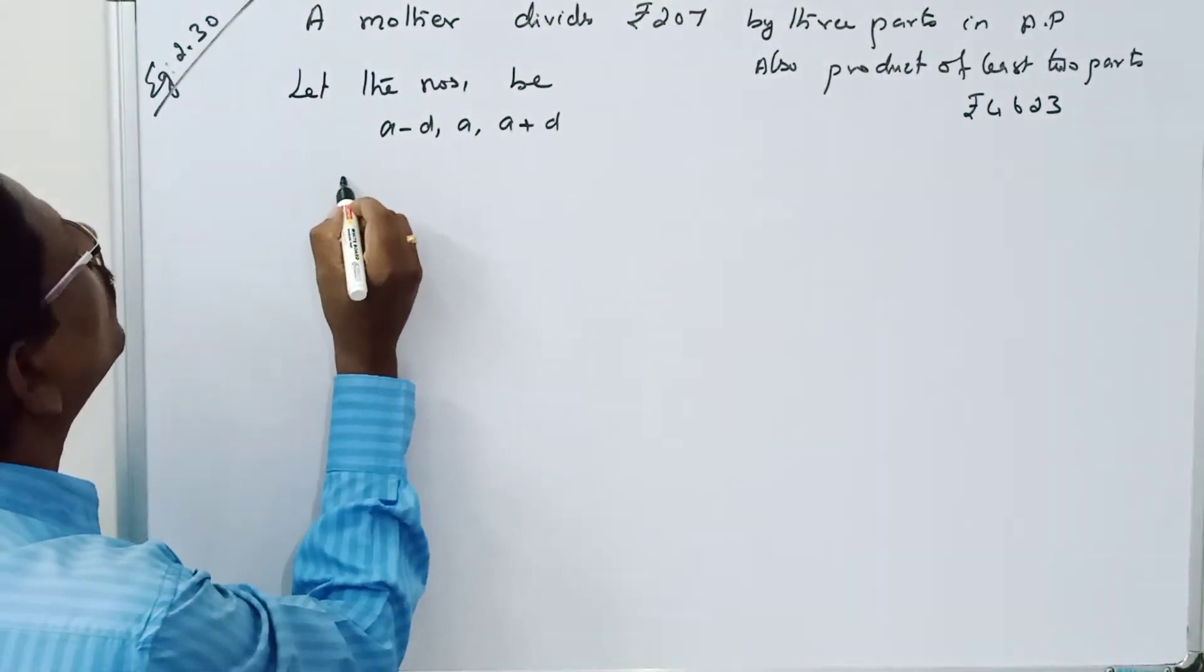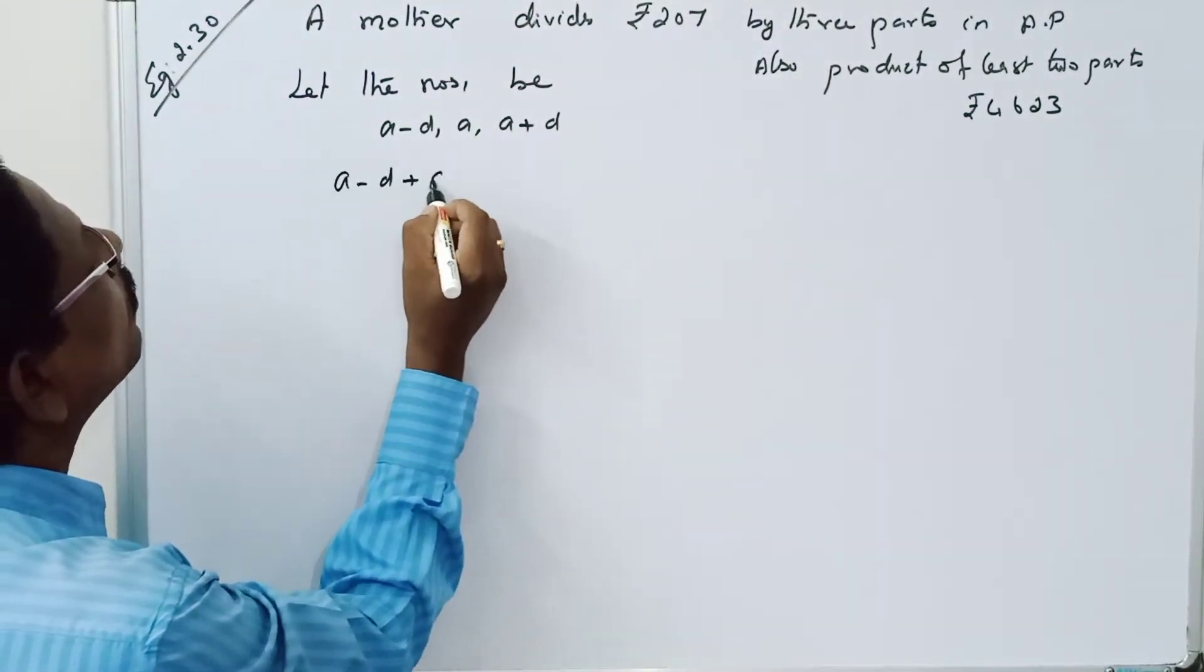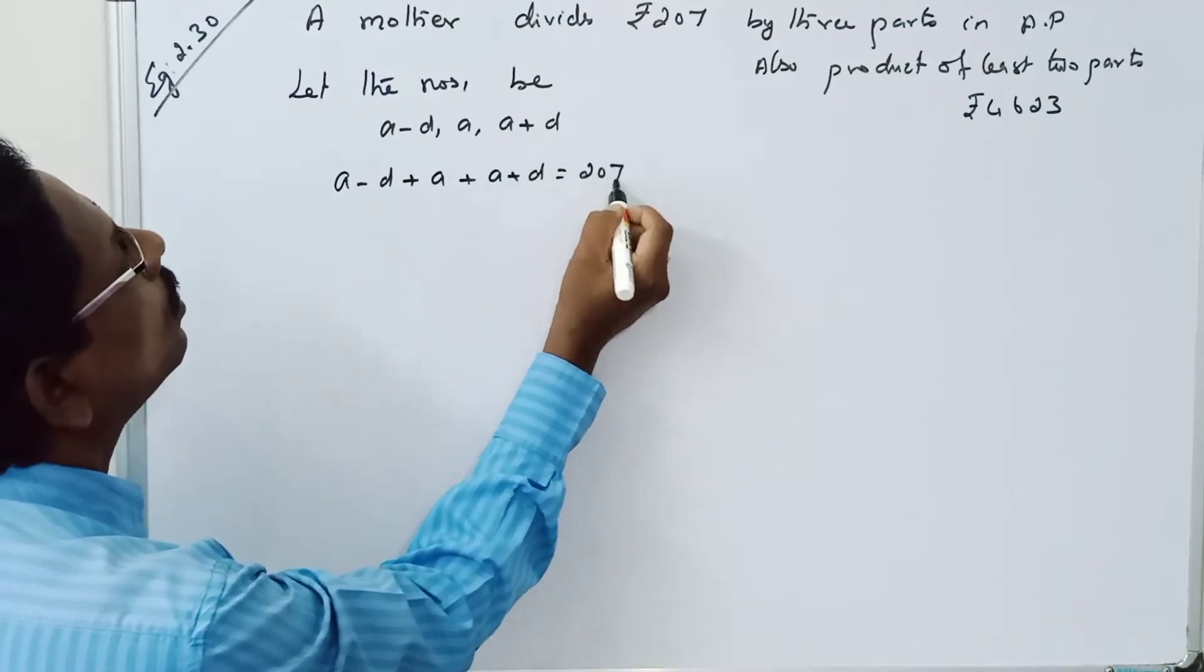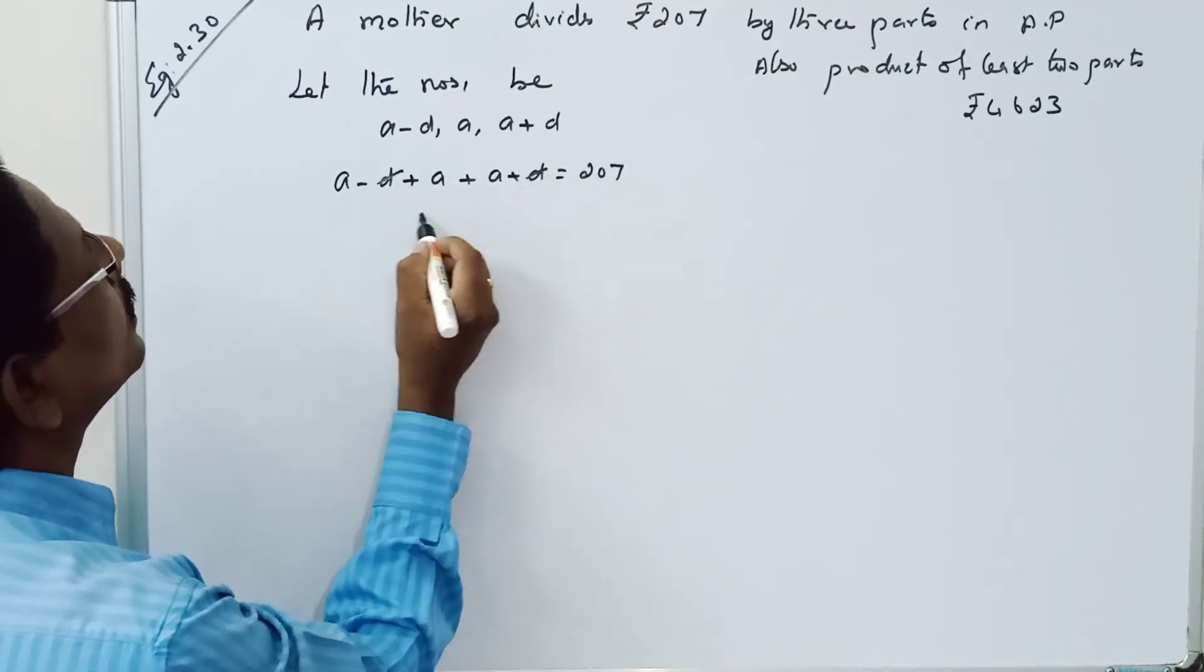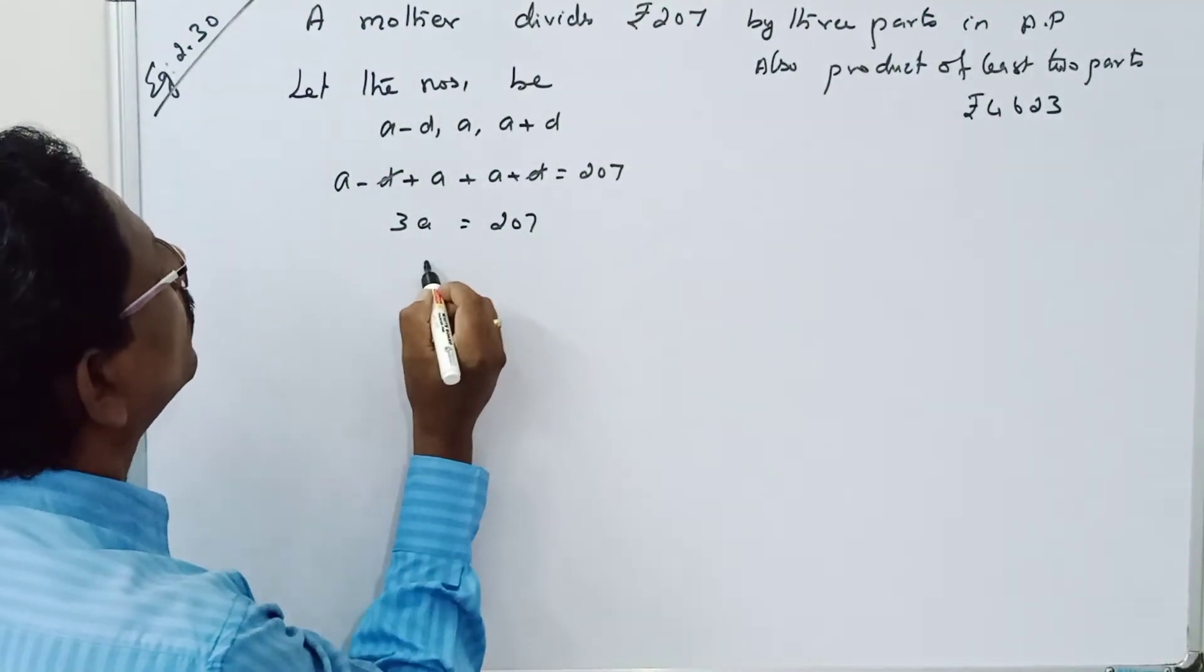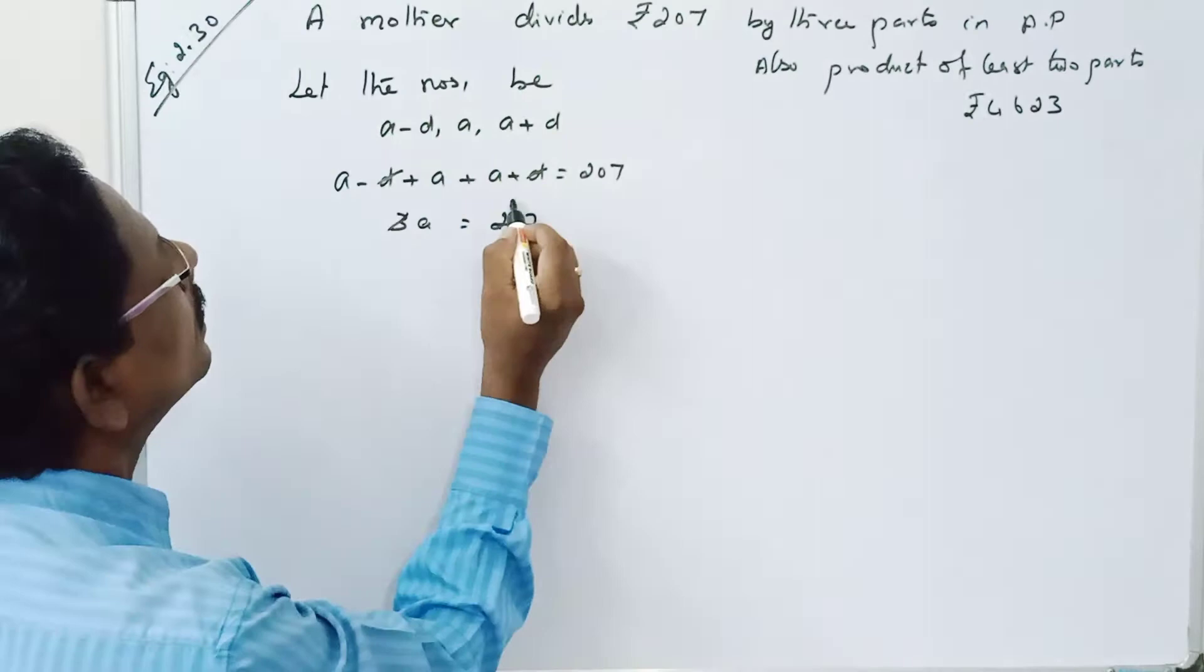a minus d plus a plus a plus d equals 207. The d terms cancel. 3a equals 207. Dividing by 3, a equals 69.